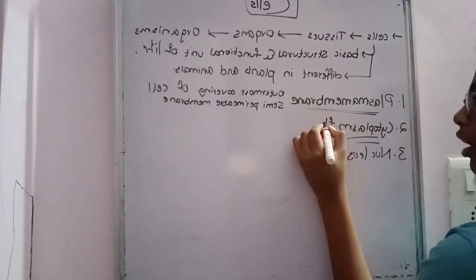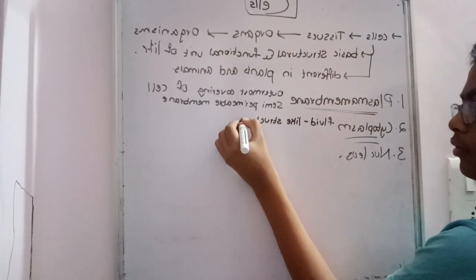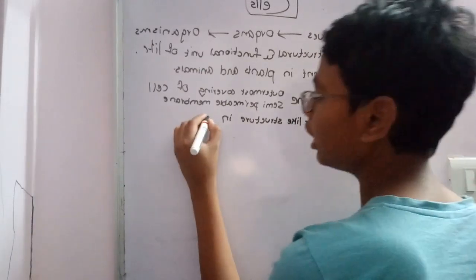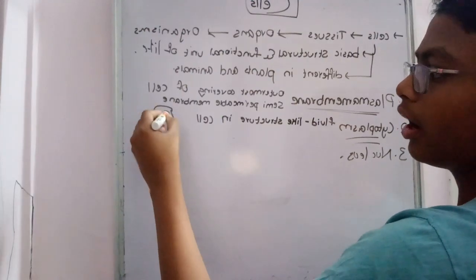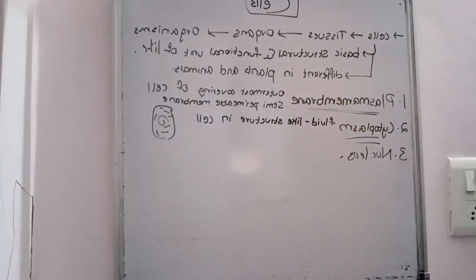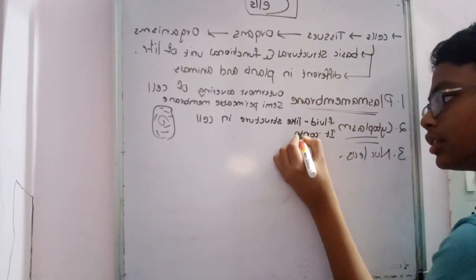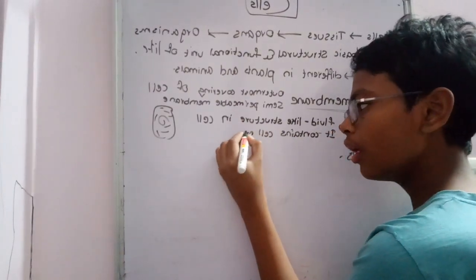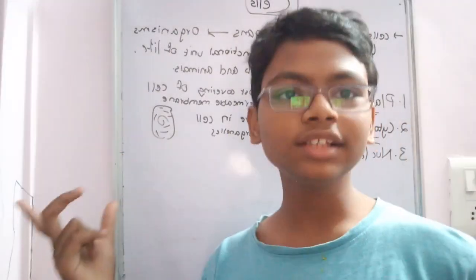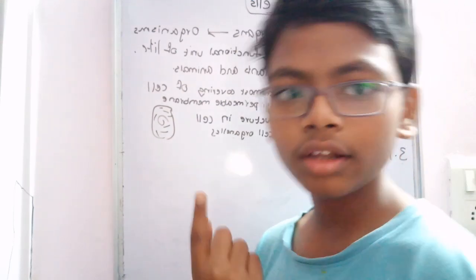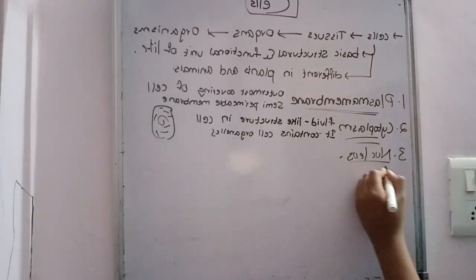The next part is the cytoplasm, which is a fluid-like structure inside the cell. The empty space inside the cell is covered by this semi-fluid-like structure called cytoplasm. It contains cell organelles — cells have organelles just like we have hands, legs, and a head.